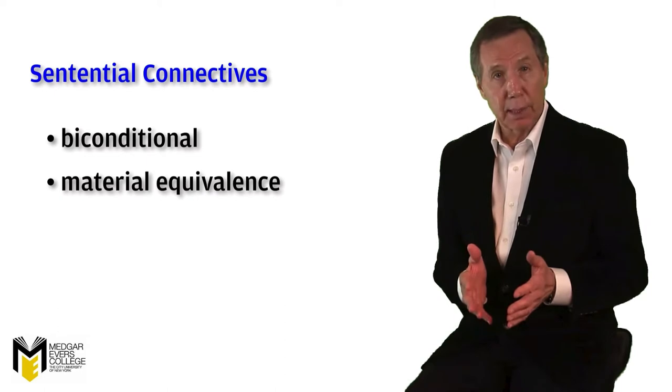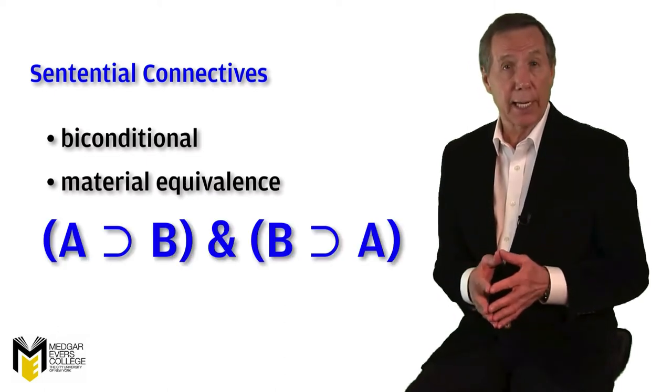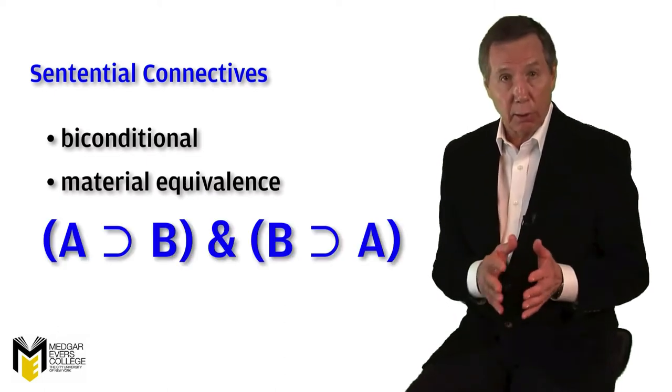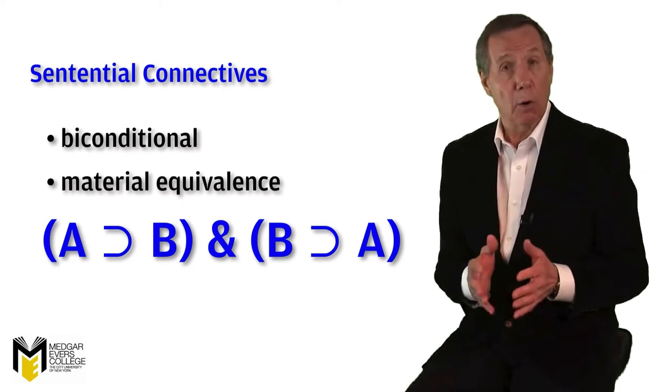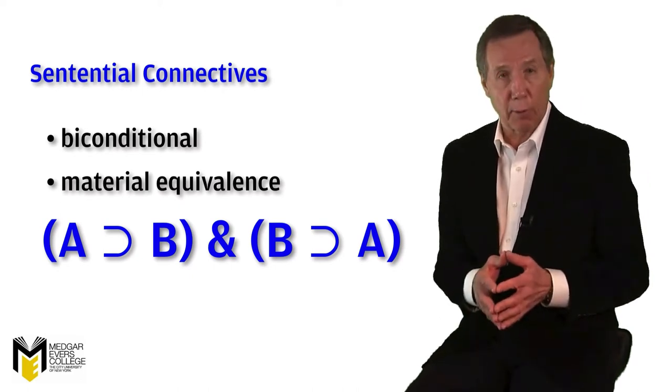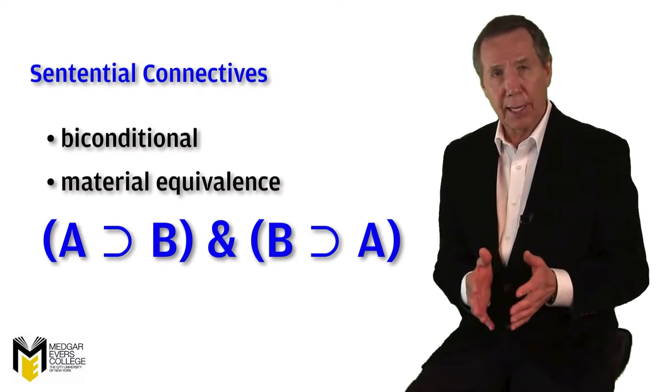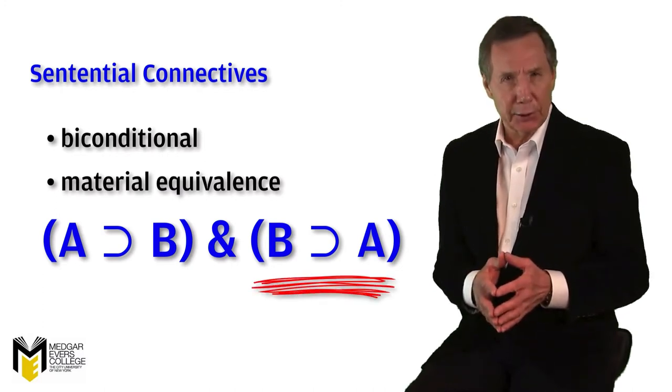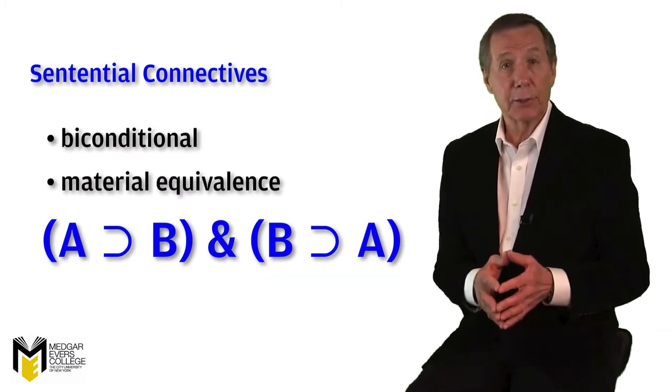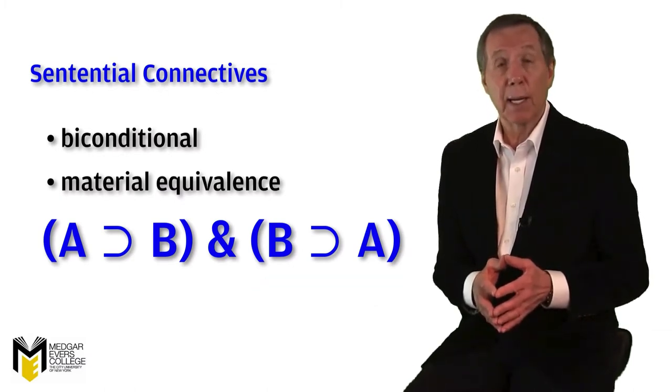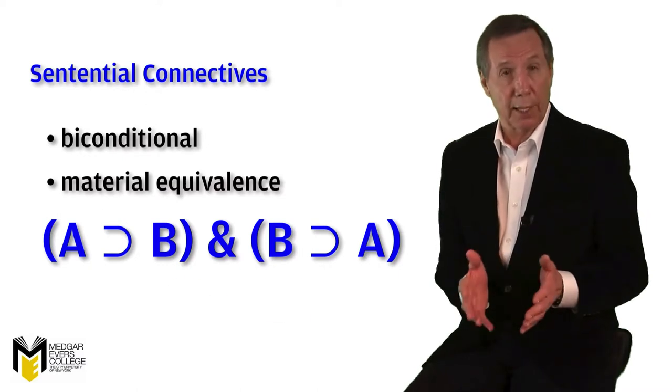We can express this symbolically as open parenthesis A horseshoe B close parenthesis ampersand open parenthesis B horseshoe A close parenthesis. Note that in the second conjunct, the antecedent and consequent are reversed. However, in sentential logic we notate this relationship by using the triple bar thus.